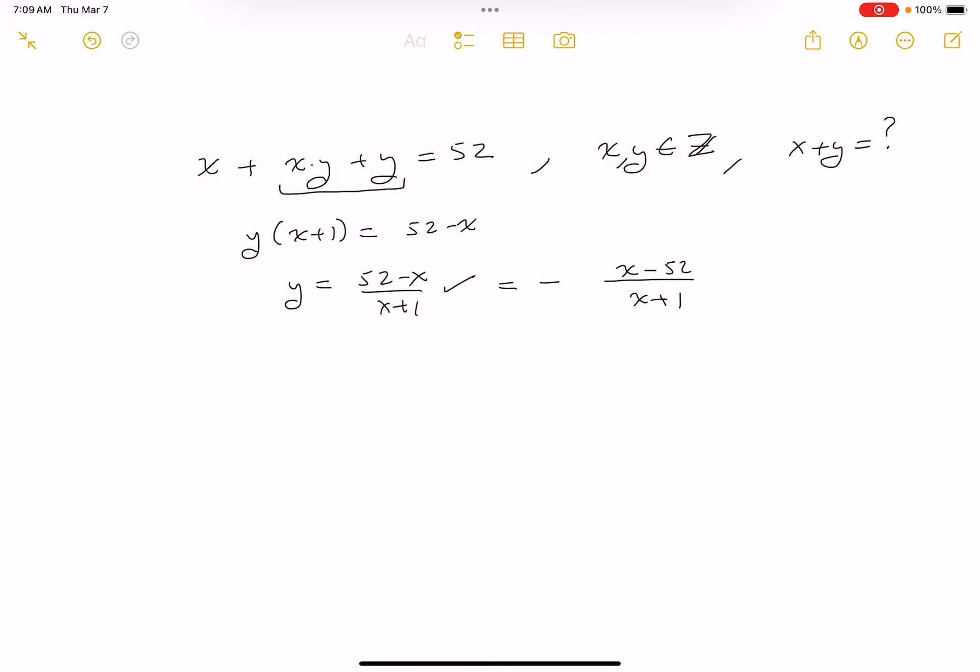So I want to go through the long division with you. x plus 1 divided into x minus 52. That goes in one time and you're going to get x plus 1. You're going to subtract and you get minus 53.